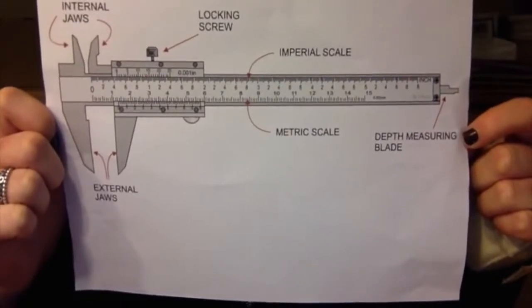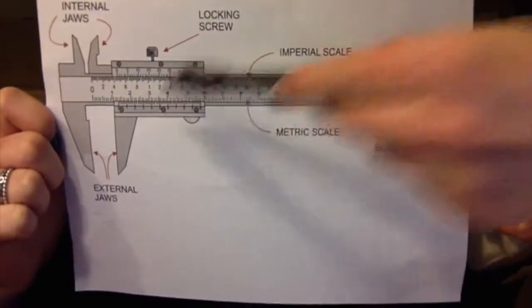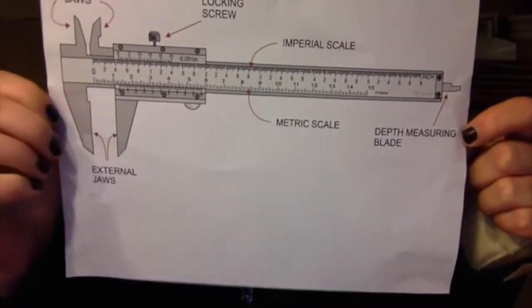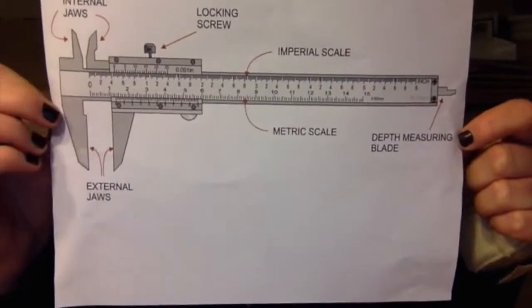There are ten tick marks on the sliding scale. The leftmost tick mark on the sliding scale will let you read from the fixed scale the number of whole millimeters that the jaws are opened.